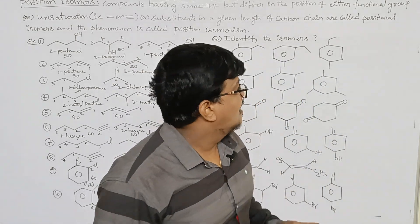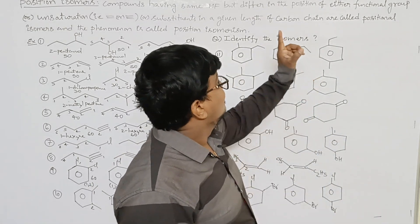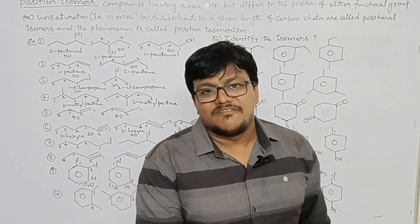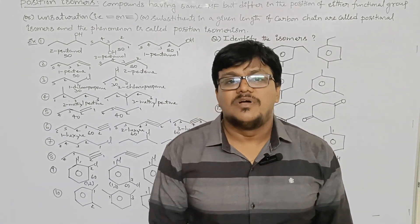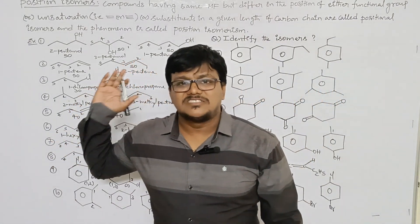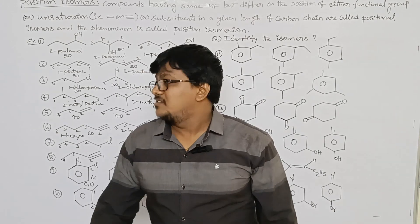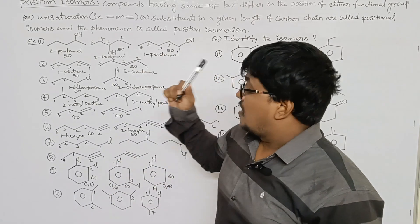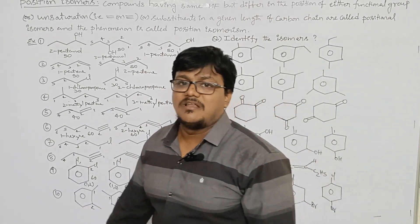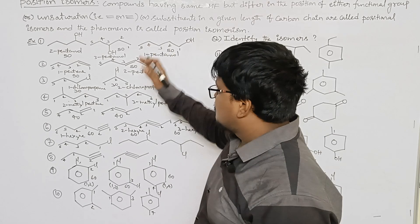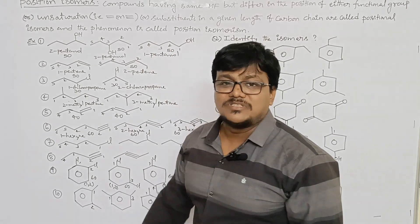So the basic condition is: positional isomers means compounds having the same molecular formula but differing in the position of either the functional group, unsaturation, or substituent present in the given length of the parent chain. Total 10 examples were discussed.